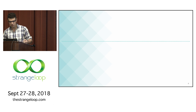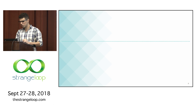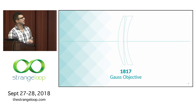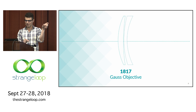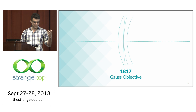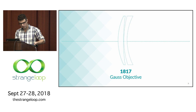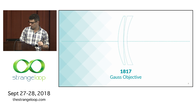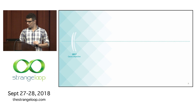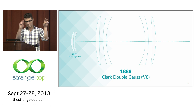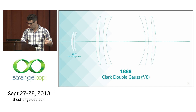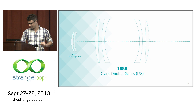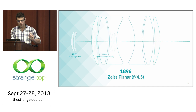Lenses have been around for quite a while. One of the first modern lenses was discovered in 1817 by Carl Friedrich Gauss. It's called the Gauss Objective Lens and consists of two closely spaced menisci — just pieces of glass, a negative one and a positive one. This was the design of a nearly perfect lens with very few aberrations. It was a nice, simple, elegant system — very easy to work with and understand. But it got more complicated over time. In 1888, Alvin Clark and Bausch and Lomb refined the design by placing two of these together, producing a better aperture.